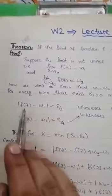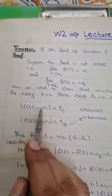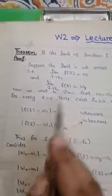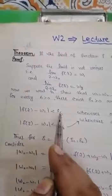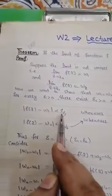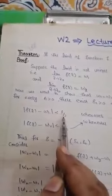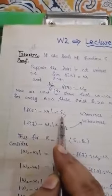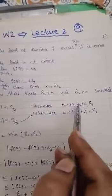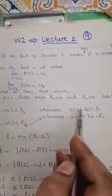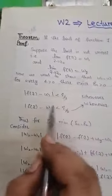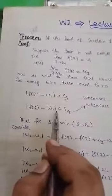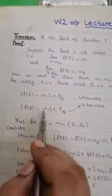Since epsilon/2 is also a positive number, we can write that whenever |z - z-naught| < delta1, we have |f(z) - w1| < epsilon/2. Similarly, since w2 is the second limit, we can write in modulus form: |f(z) - w2| < epsilon/2, whenever |z - z-naught| < delta2.